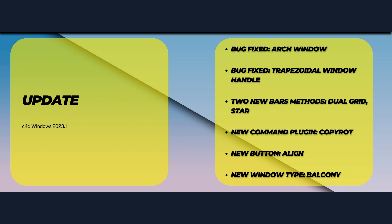A new command plugin is also included. It's called Copy Rot — it's a command data plugin. You simply select a polygon and press Copy Rot, then go to your window plugin, select the window instance, and press the new Align button. It will align the window exactly to the polygon, so you don't have to rotate and try things out manually.